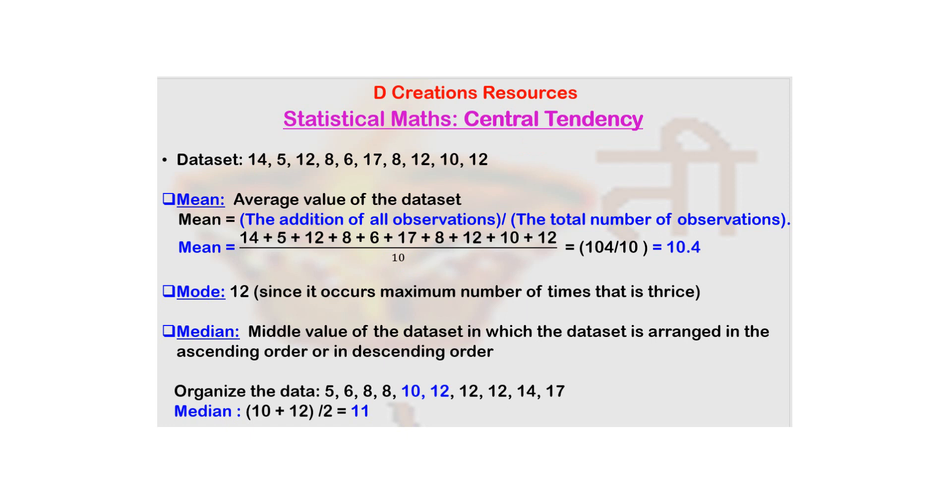So total number of elements are 10. So you add all the 10 elements and divide it by 10. So the addition, you can quickly do it yourself, pause the video, do the addition, and then cross check. The addition comes out to be 104. So that divided by 10 is 10.4. So 10.4 is the unique single number which has been right now associated with this data set as a mean of this data set. So now I hope you are able to understand the meaning of central tendency.